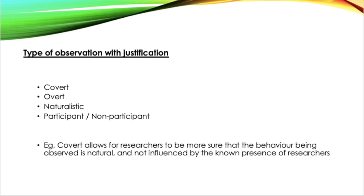First, the question asks what type of observation you'd like to go for — you may want a covert or overt observation, or maybe even a naturalistic observation. Whatever you decide, the key part is to justify why. If you don't say why, you won't get all of the marks. For example, if you chose a covert observation, your justification might be that it allows experimenters to observe gym behaviour without participants knowing they're being watched, making their behaviour more natural.